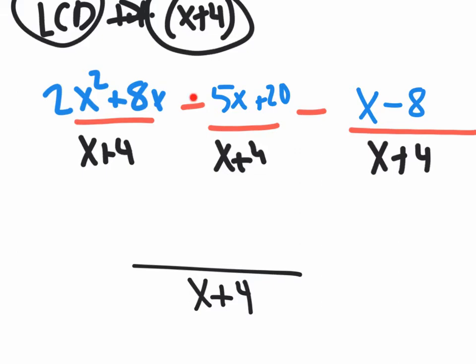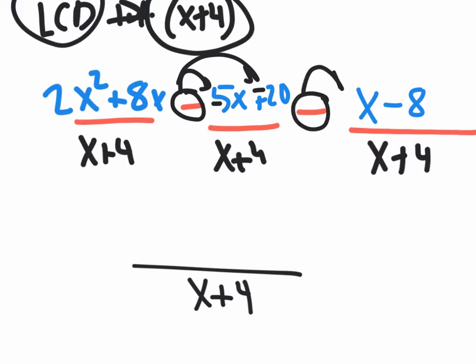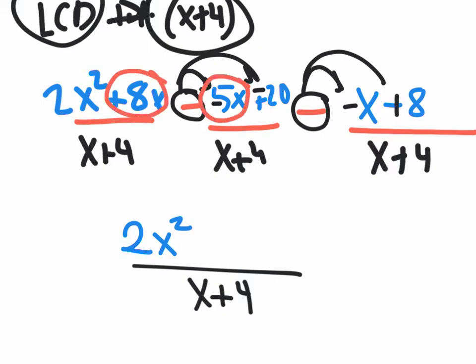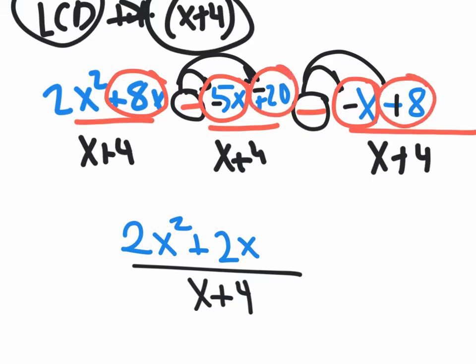Let's start combining like terms. Notice there's a minus sign, not a plus sign, so I need to distribute. This minus sign goes in front of the five, making it negative five X, and in front of the 20, making it negative 20. Same thing: this minus sign goes in front of the X, making it negative X, and in front of negative eight, making it positive eight. Now combining like terms: two X squared stays. For X values: eight X minus five X is three X, minus another X gives two X. And negative 20 plus positive eight gives negative 12.